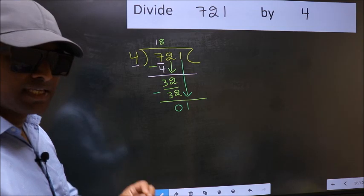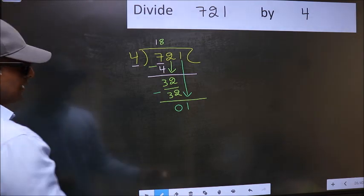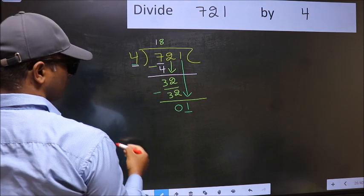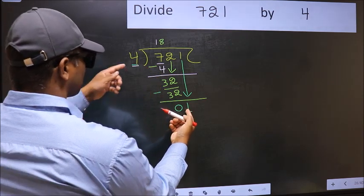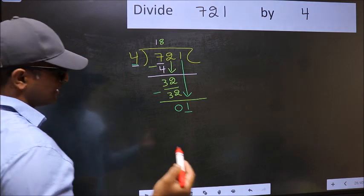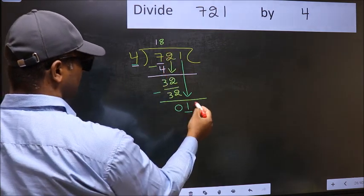And the mistake is this: here we have 1 and here 4. 1 is smaller than 4. So what many do is they directly put a dot and take zero, which is wrong.